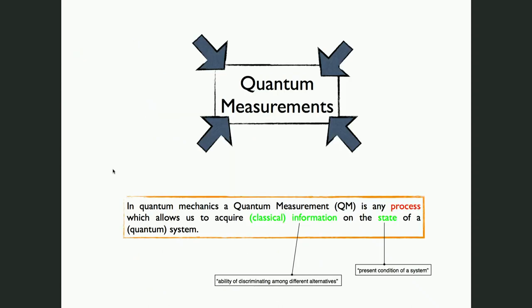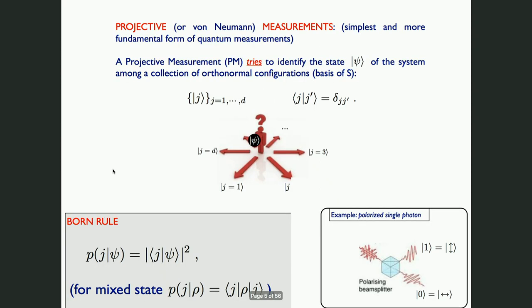In quantum mechanics, a quantum measurement is basically any process which allows you to acquire classical information on the state of a quantum system. In the introduction of any quantum mechanics course, you learn about projective measurements, which are the fundamental tools used to describe the extraction of information from a quantum system.